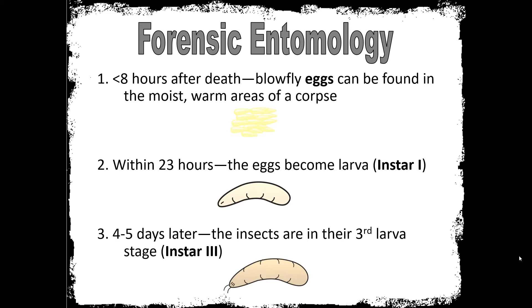Blowflies have an incredible sense of smell and will show up very quickly after death. The female blowfly will lay anywhere from 150 to 200 eggs, and within a day those eggs will hatch into first stage larvae. The eggs are going to be very small and will be laid in moist, warm environments — that's what the blowfly looks for when laying her eggs. The first instar larvae are very tiny, ranging anywhere from one millimeter to 10 millimeters. At this stage they are very hungry and will crawl into the recesses of the body and begin feeding.